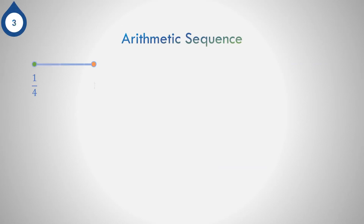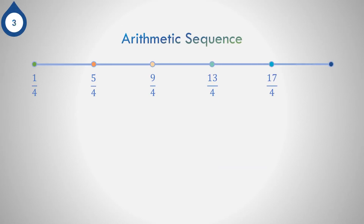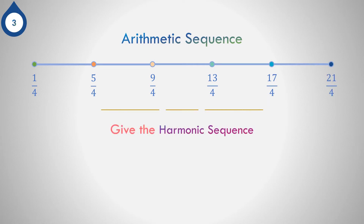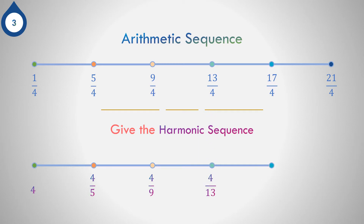Question number 3: Can you give the harmonic sequence of 1/4, 5/4, 9/4, 13/4, 17/4, and 21/4? Correct. The reciprocal of 1/4 is 4/1 or 4. The reciprocal of 5/4 is 4/5, then 4/9, 4/13, 4/17, and 4/21.